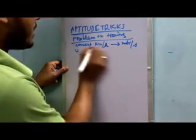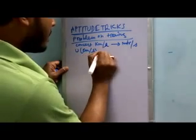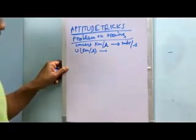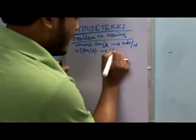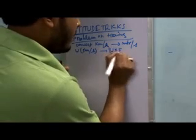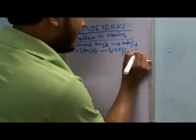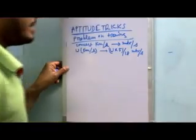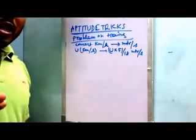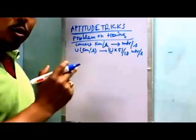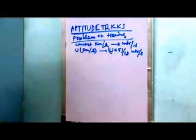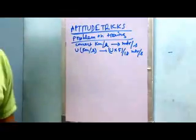If U is denoted as km per hour, it will be equal to U multiplied by 5/18 meter per second. So to convert kilometer per hour to meter per second, you have to multiply U by 5/18.